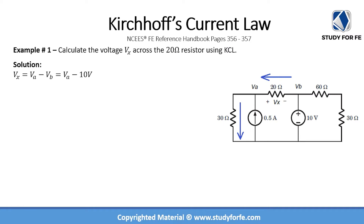First, you have to recognize that Vx is the voltage across the 20 ohm resistor. Let us denote two nodes: node A and node B. The voltage at node A is called VA and the voltage at node B is called VB. So Vx is the difference between VA and VB, i.e., VA minus VB.